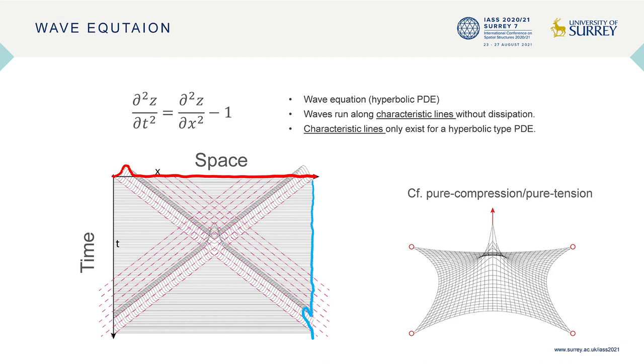From this observation, we understand that the boundary condition in hyperbolic PDE cannot be freely determined. Any boundary condition that contradicts the form of the waves running along the characteristic lines is incompatible with the problem. In contrast, the pure compression or pure tension cases always give a solution regardless of the choice of the boundary conditions, because the solution is basically a smooth averaging between the boundary conditions.